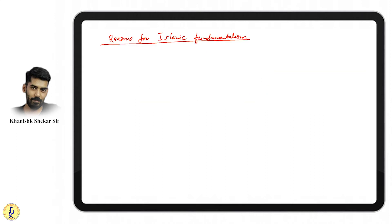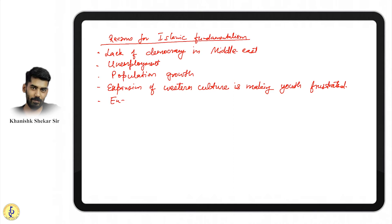Both are against non-believers. Islam has the concept of kafir, and Christianity has similar concepts—all or nothing, you're either with them or not. This is a very extremist view. The reasons for Islamic fundamentalism include lack of democracy in Middle East, unemployment, overpopulation, expansion of Western culture frustrating youth, and both being arch rivals of communists.